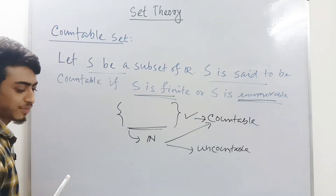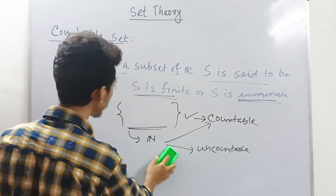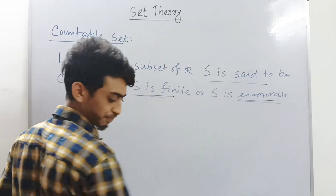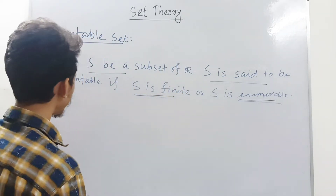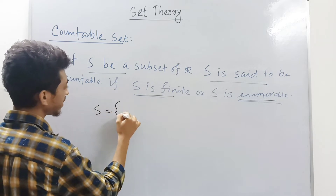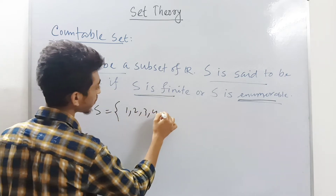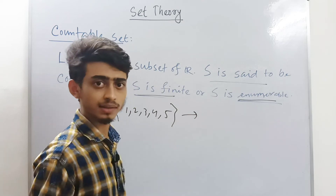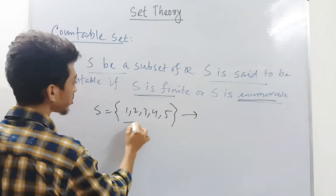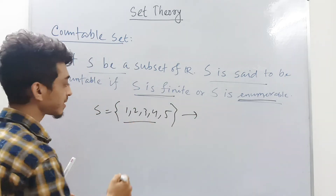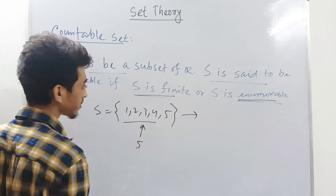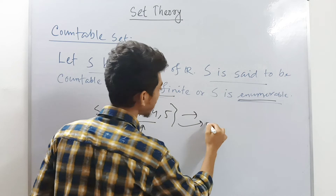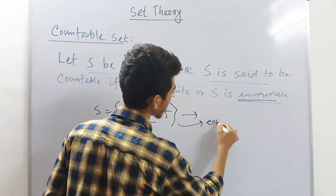For example, consider the set {1, 2, 3, 4, 5}. यह set countable है या नहीं? यह set countable होगा क्योंकि इसके अंदर 5 elements हैं — finite number of elements हैं — तो S countable set हो जाएगा।